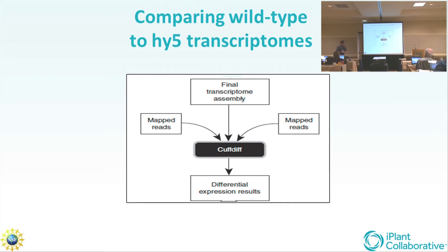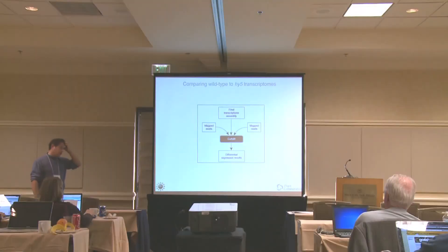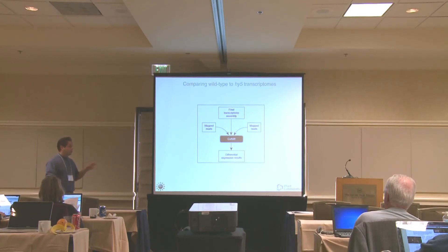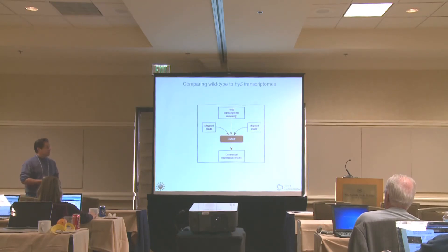Now we're running Cuff diff, which is in many ways similar to Cufflinks - it does transcript assembly and quantification, but also does a comparison. To compare different transcriptomes derived from different sequencing runs, it first merges the replicates, with differences between replicates incorporated into the test statistic. It also has a setting for false discovery rate analysis that calculates a more rigorous p-value called a q-value, which takes into account multiple trials. The p-value cutoff is 0.05, and the q-value cutoff is also 0.05 but much more stringent, and that gives us our differential expression results.